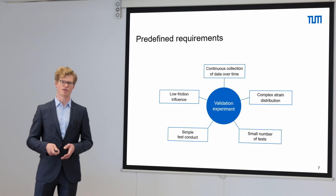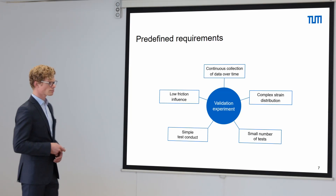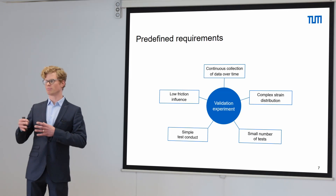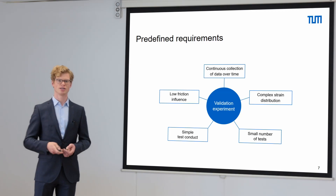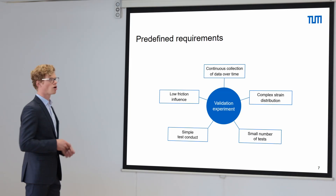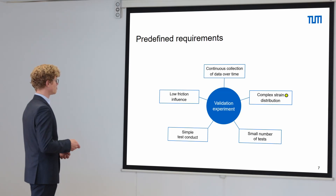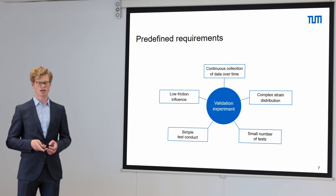Furthermore, a low friction influence — this means that the test is not dominated by friction and so is dominated by the material behavior, so I can assess the model quality for the material in detail. A complex strain distribution allows a comprehensive validation of the material models, and finally a small number of tests and a simple test conduct reduces the effort for the validation of material models.